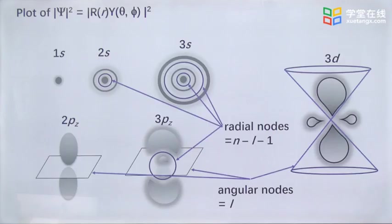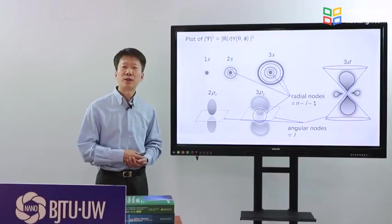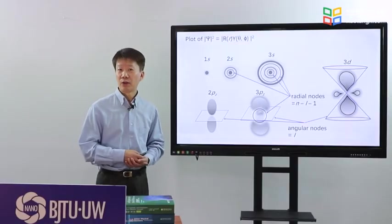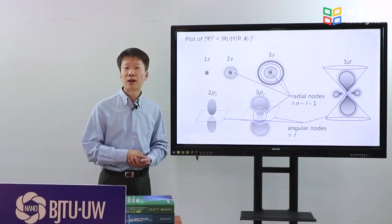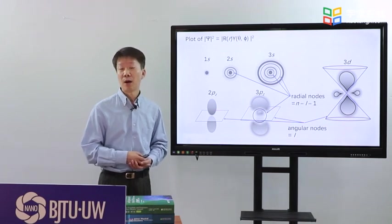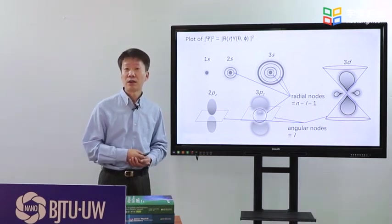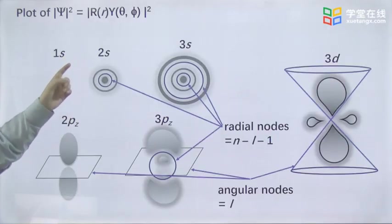Similarly, there is angular nodes where no electrons found. The number of nodes, both radial and angular, can be calculated with the formula shown on the slide. Why are they named radial and angular nodes? Because the wave function written in polar coordinates consists of radial components r of little r, see the slide here, and angular components y of theta and phi.